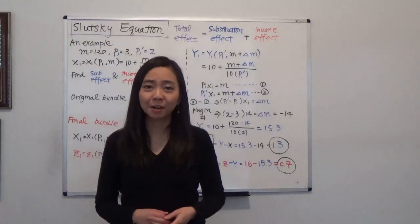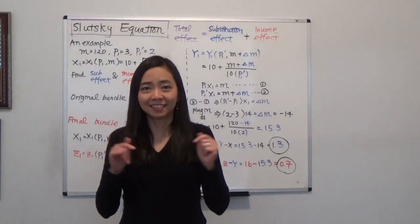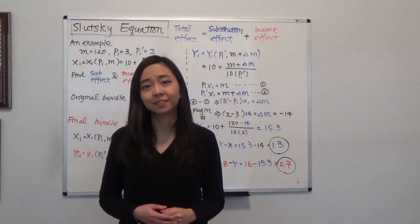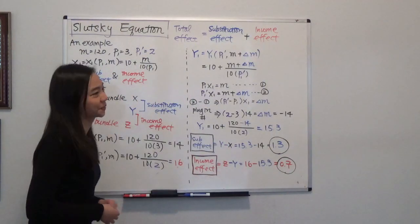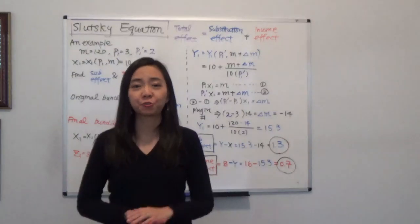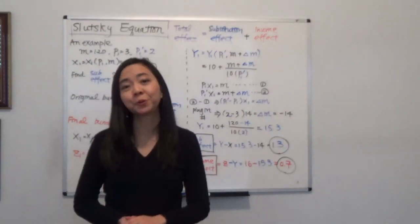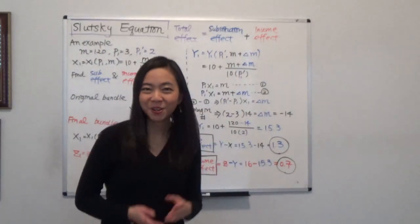Hello everyone, my name is Iris Franz. I am Lian Wenru. Today we are going to continue to talk about the Slutsky equation. In particular, I am going over an example in Hall Variant's textbook.